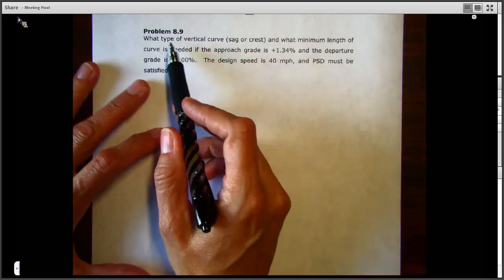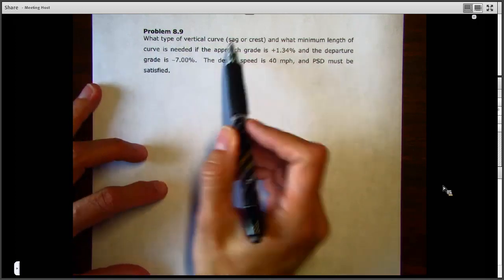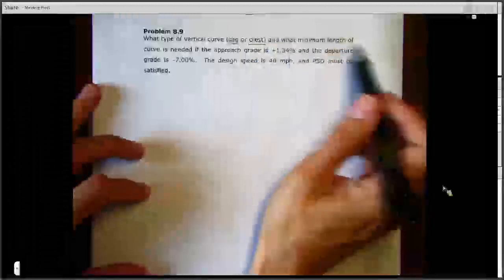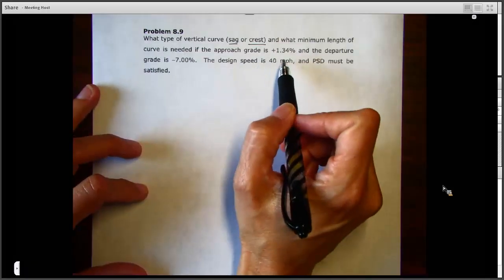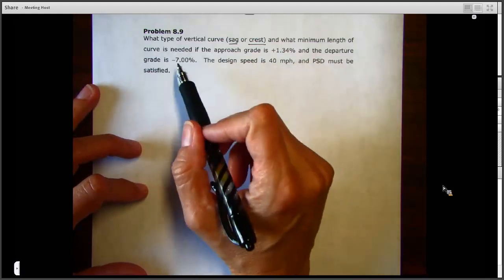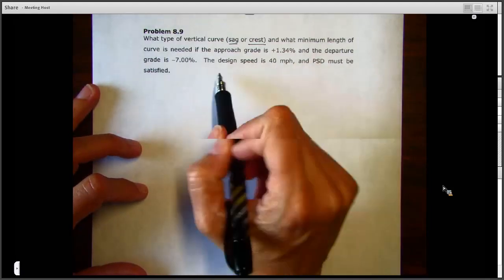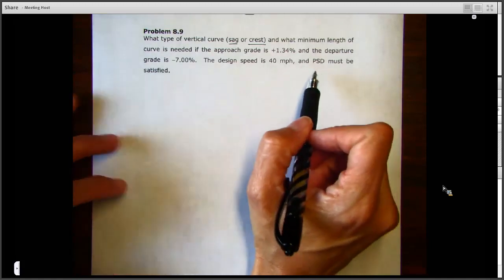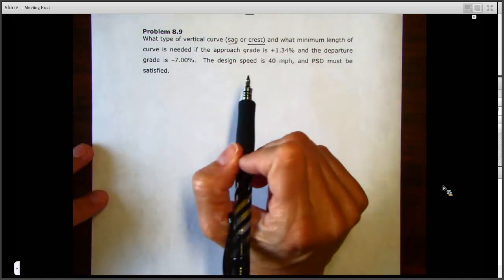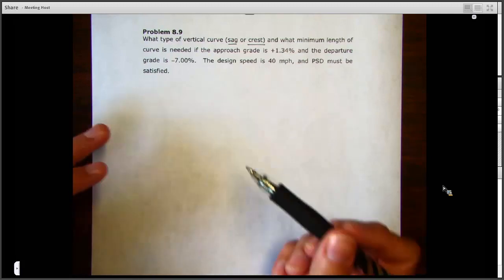Okay, in this problem we're looking at the question of what type of vertical curve would it be, sag or crest, and what minimum length of curve is needed if the approach grade is 1.34 percent and the departure grade is minus seven percent. The design speed is 40 miles per hour and PSD, passing sight distance, must be satisfied.